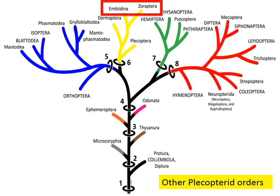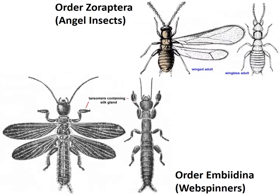There are two remaining plecopteroid orders: Embiodina and Zoraptera. These are both smaller orders and more uncommonly encountered. The order Zoraptera, or angel insects, are found in both wingless and winged forms. When wings are present, there are two pair — membranous with very reduced venation patterns. The antennae are nine-segmented. The wingless forms actually lack eyes and ocelli, whereas the winged forms have them. Tarsi are two-segmented, and cerci are short. They have ten abdominal segments. These guys are found in soil and decaying vegetation, and are rarely encountered.